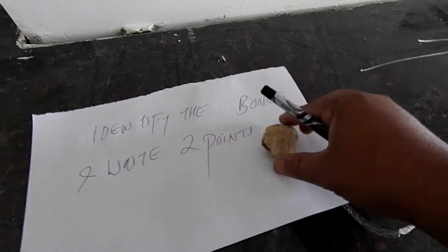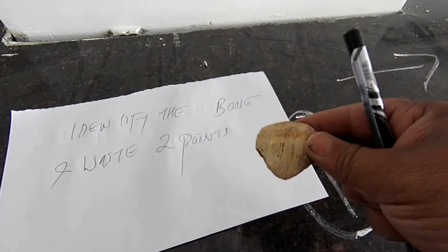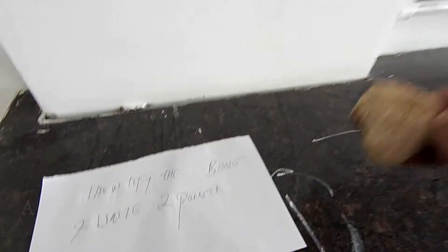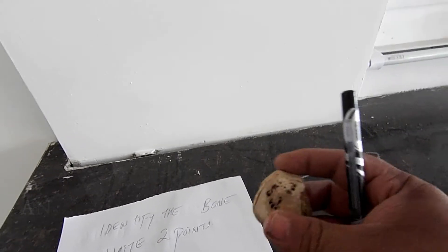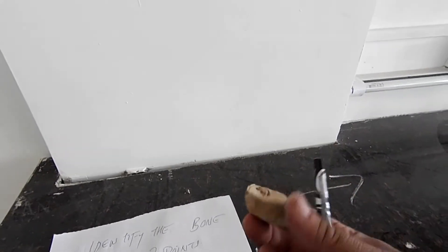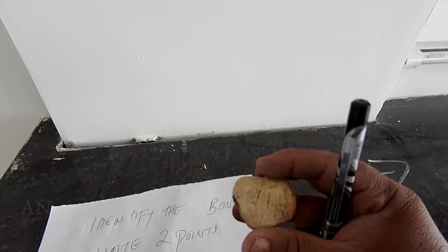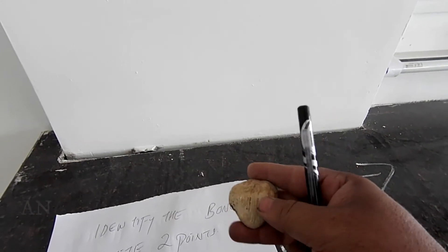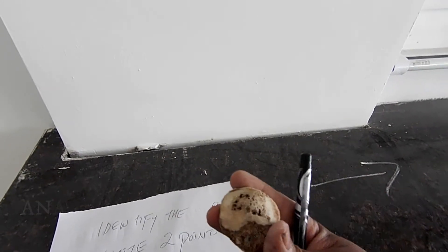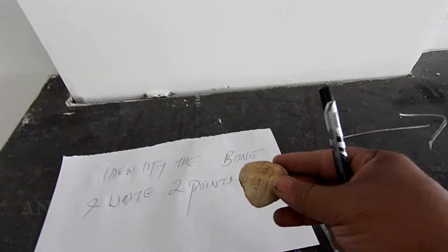The first spotter — identify the bone and write two points. Just take your time; you have one minute for each spotter, so don't hurry. This is not talus, this is patella. You can observe the patella surface here, the apex and the posterior surface. So this bone — very easy — patella.